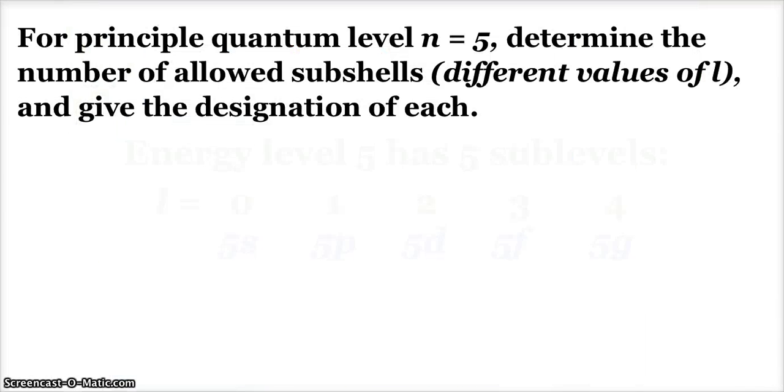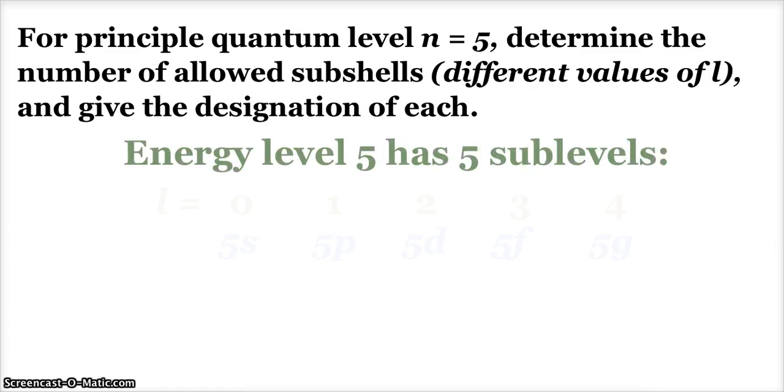For principal quantum level five, the number of subshells, the fifth energy level has five sublevels. And I already mentioned them: 5S, 5P, 5D, 5F, and 5G.